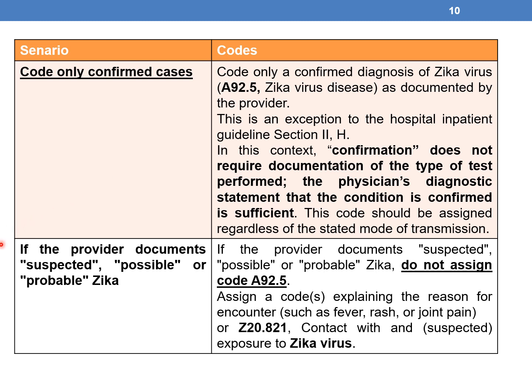If the provider documents 'suspected,' 'possible,' or 'probable' Zika, do not assign code A92.5. Instead, assign a code explaining the reason for the encounter — such as fever, rash, or joint pain — or Z20.821 to indicate contact with and suspected exposure to Zika virus.